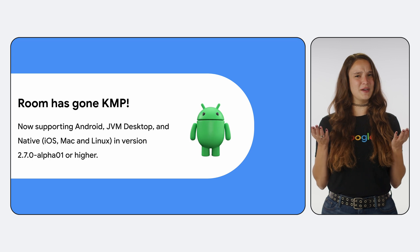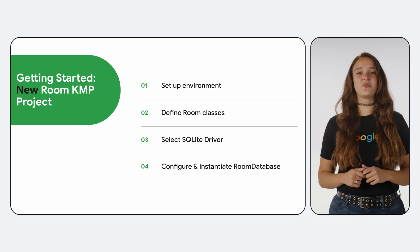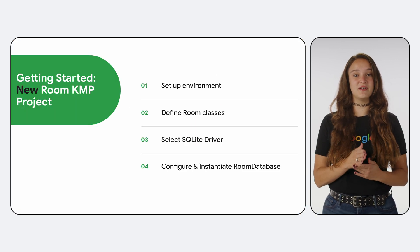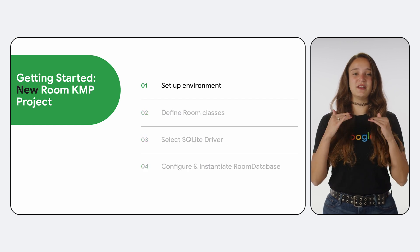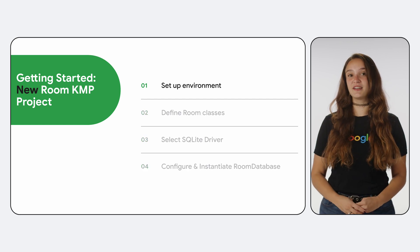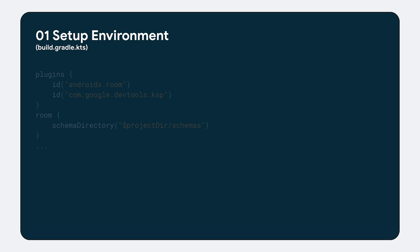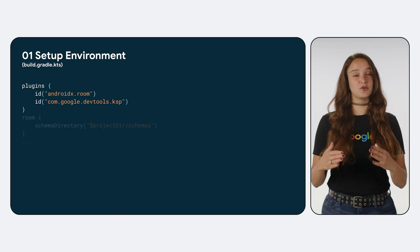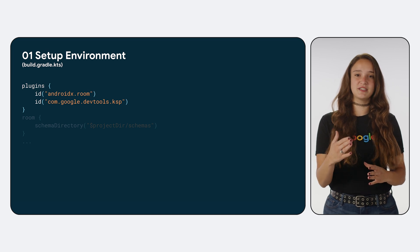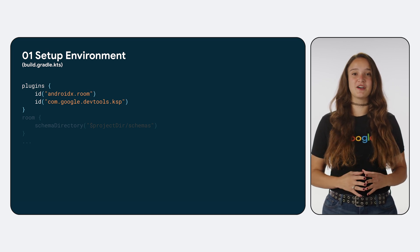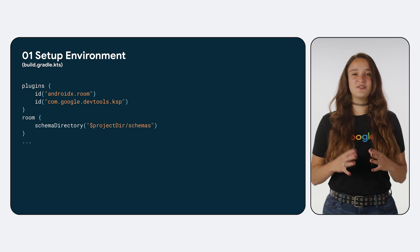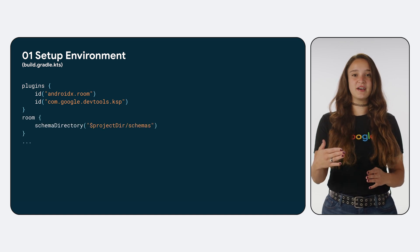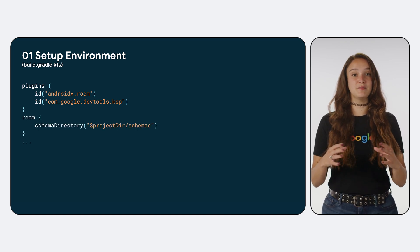So how do we get started with Room KMP? Let's first go over how to get started with Room KMP for a brand new project. The first step will be to set up your environment to be KMP-friendly. You will go to your build file and configure your plugins. This means adding the Room Gradle plugin to help manage your database schemas, and adding the KSP plugin to the project, because Room is also an annotation processor. To configure Room schemas in the Room Gradle plugin, you will also need to set up a schema export directory.